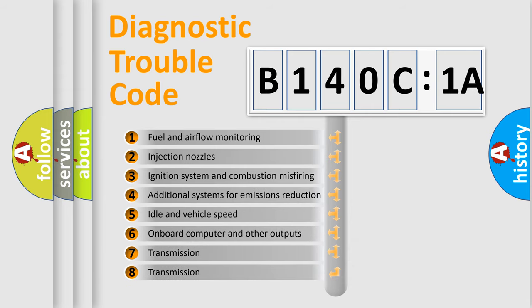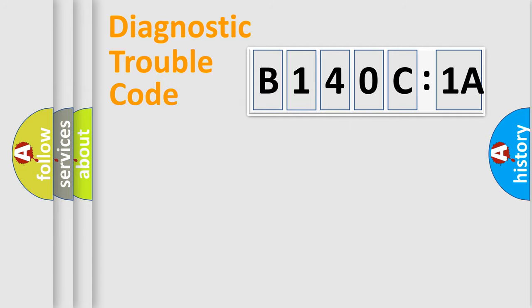The third character specifies a subset of errors. The distribution shown is valid only for the standardized DTC code. Only the last two characters define the specific fault of the group.